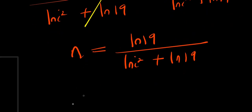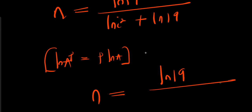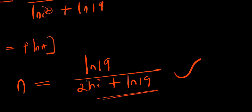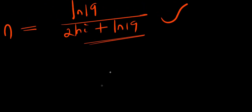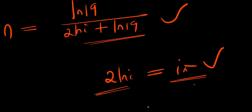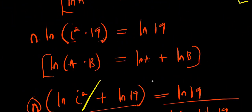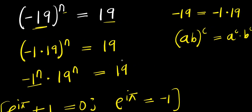Now, comparing the two methods: in Method 1 we got n equals natural log of 19 divided by i times pi plus natural log of 19, and in Method 2 we got n equals natural log of 19 divided by 2 times natural log of i plus natural log of 19. If you compare these, 2 times natural log of i is the same thing as i times pi — that is the only difference between the two methods, and both solutions are correct. That's how you can solve this exponential problem step by step. Please don't forget to subscribe and share. Thank you and goodbye.